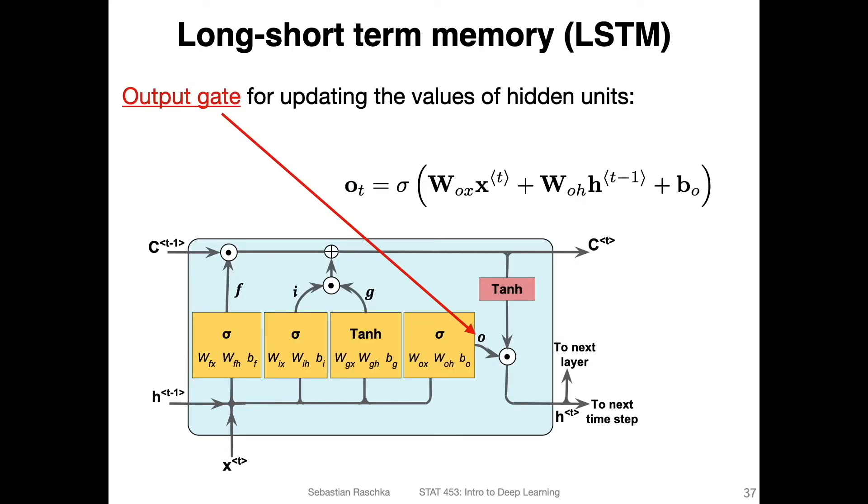We also have a third gate - that's the output gate - for updating the values of the hidden units. Before, what we had was just for the cell state. But now the cell state here also goes through a tanh and then gets multiplied. This can be between minus one and one. This gets multiplied with this output gate here. The output gate itself is also computed like the previous ones.